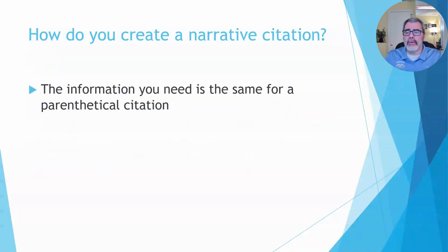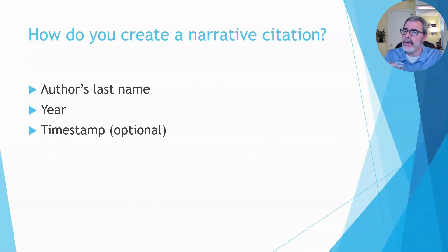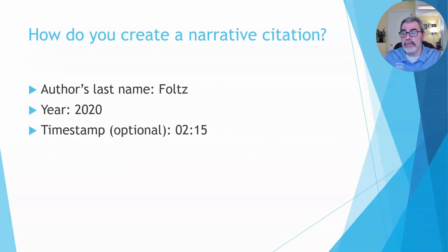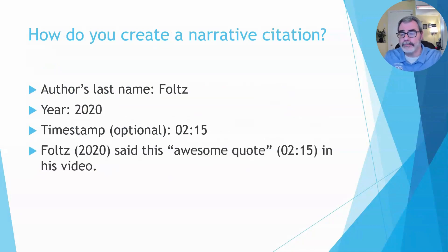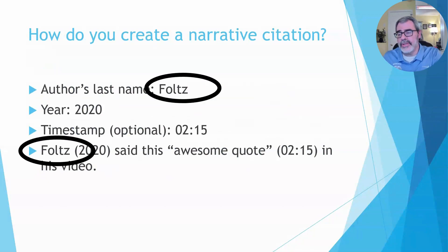What about a narrative citation? The narrative citation requires the exact same information as the parenthetical citation: the author's last name, the year, and the timestamp — again optional but strongly recommended since it functions like a page number. The more information you give the reader the better. In our example it's always going to be Fultz 2020 and then the two minute and 15 second mark. The narrative citation uses the author's name or username as the starting point of where the quote is coming from, so in this case we're saying Fultz said this.